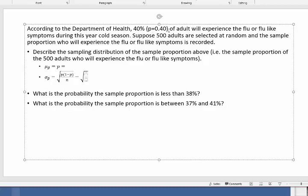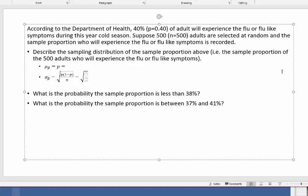So what they're telling me here is I'm going to take a sample where n equals 500 adults and record the sample proportion. Now, every time we take a sample of 500 adults, we might not get the same proportion who experienced the flu. Sometimes it'll be below 40%, sometimes above 40%. So the first question says describe the sampling distribution of the sample proportion.